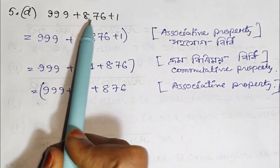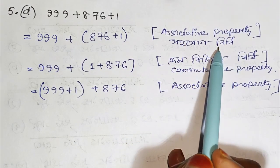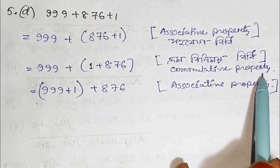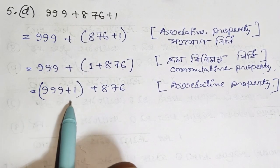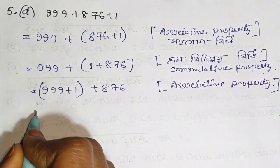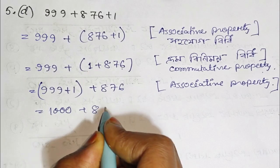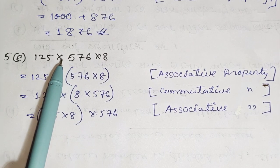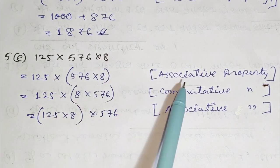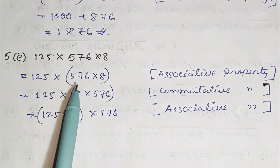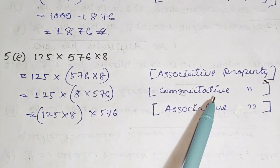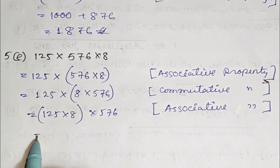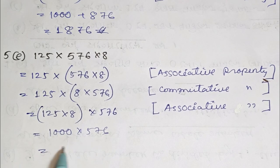Part D number 2: using the associative property, we have 76. Using the commutative property, we have 999 plus 1, which gives us 1000. So 76 plus 1000 equals 1076. The answer is 1076. Next calculation gives 1872 as the answer.